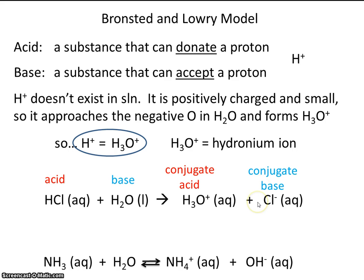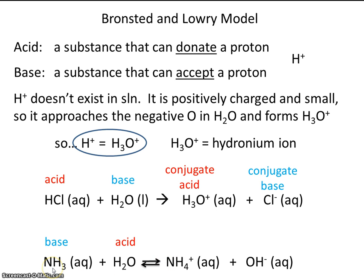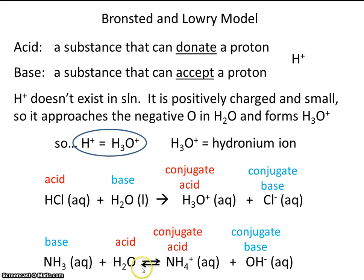Let's do the same thing for the ammonia reaction. The arrows go in both directions, showing that an equilibrium exists. In the forward direction, ammonia is a base because it's gaining a proton, and water is an acid because it's losing a proton. In the reverse reaction, NH4+ turns into NH3 by donating a proton, making NH4+ the conjugate acid. And OH− turns back into H2O by accepting a proton, making it the conjugate base.